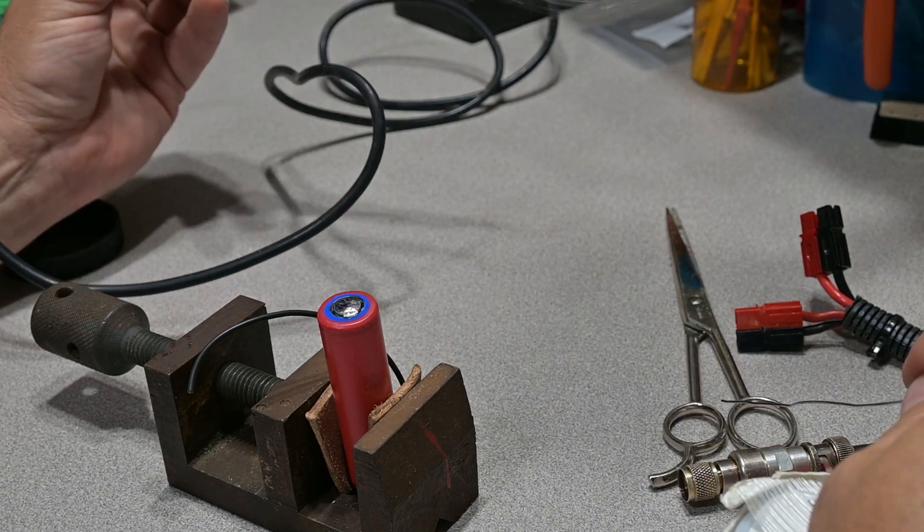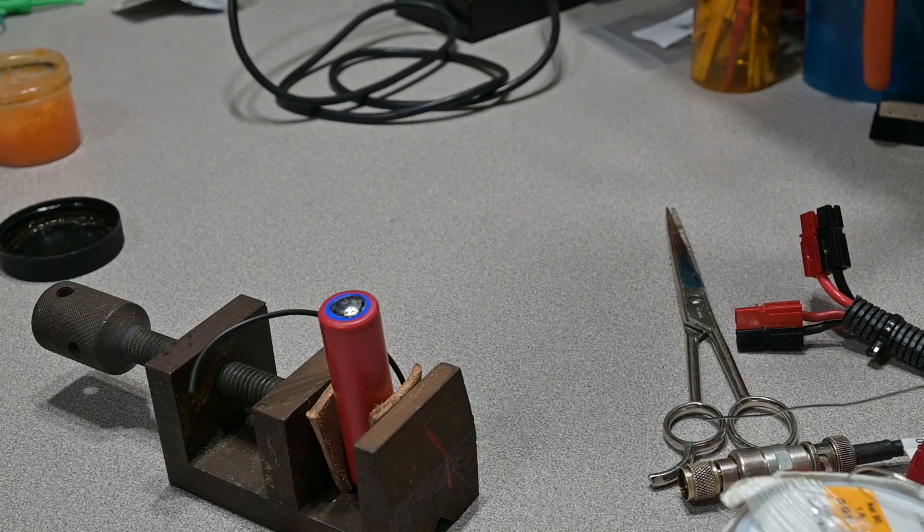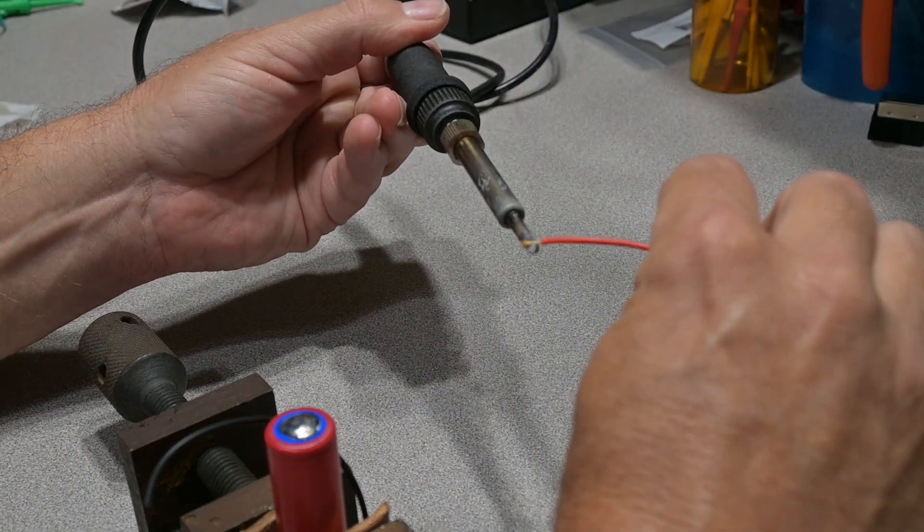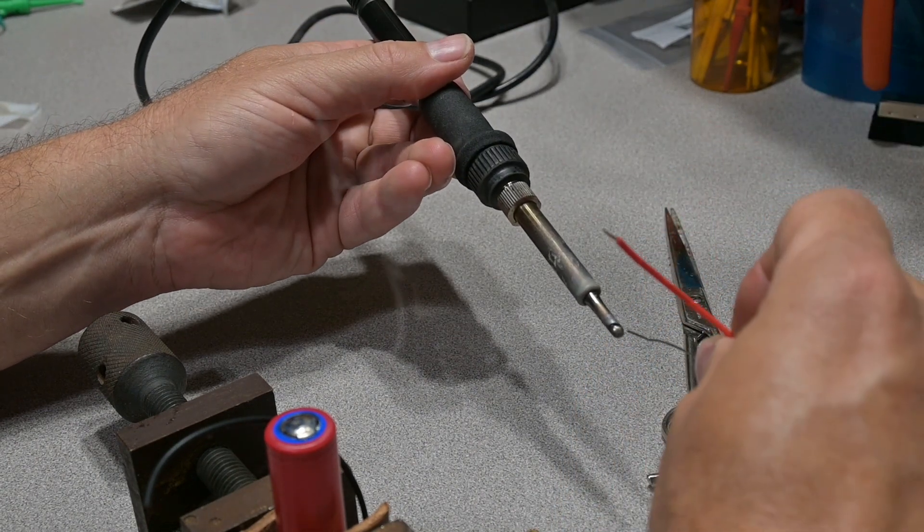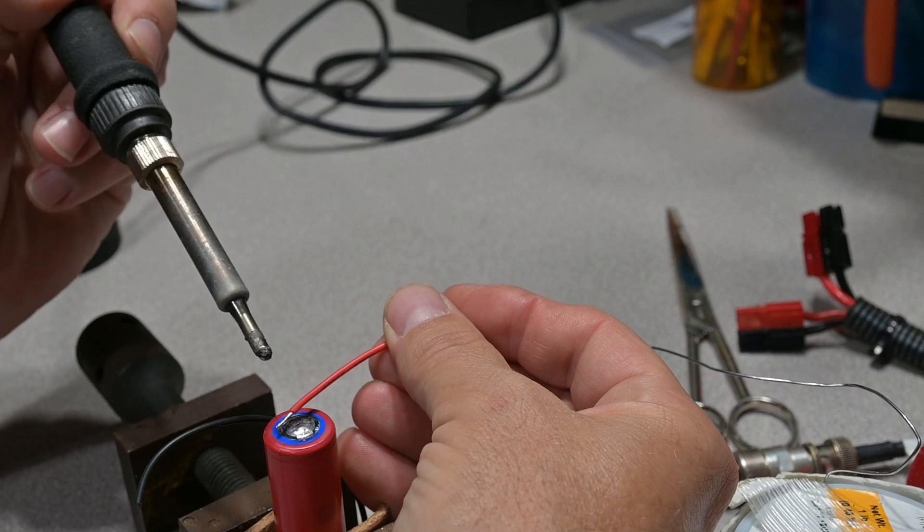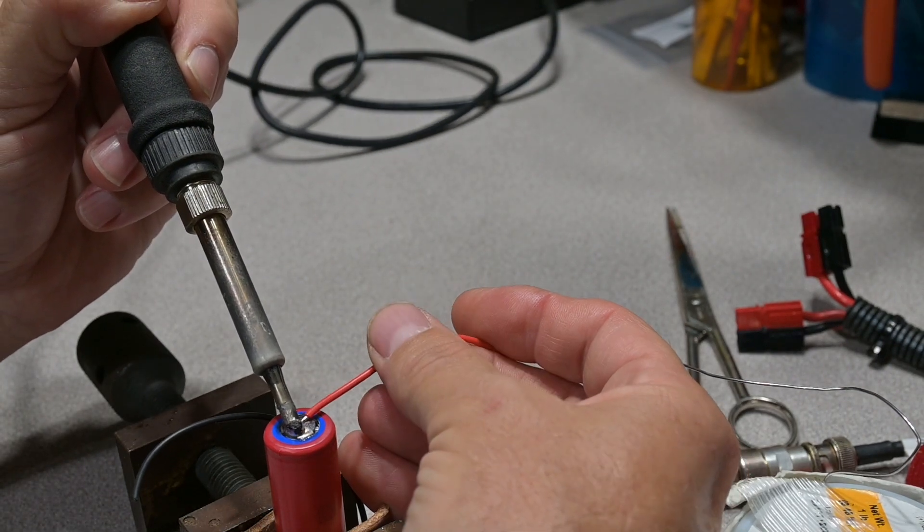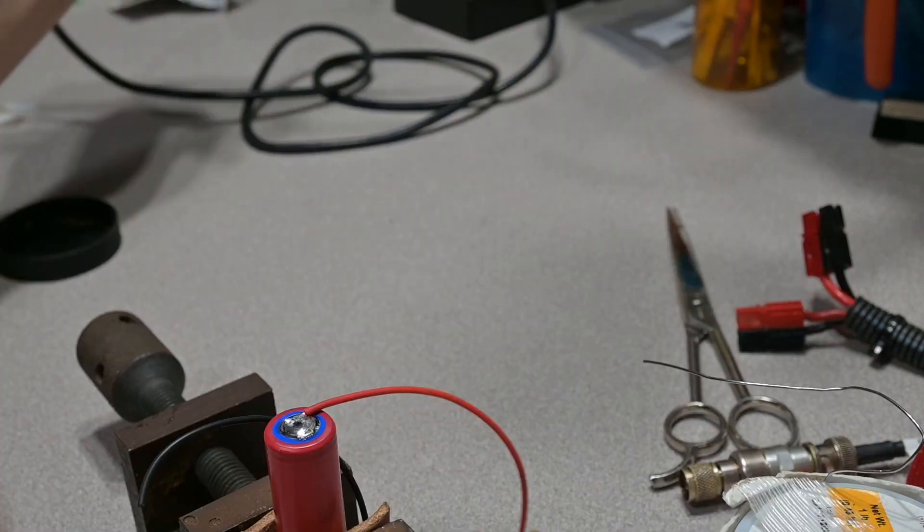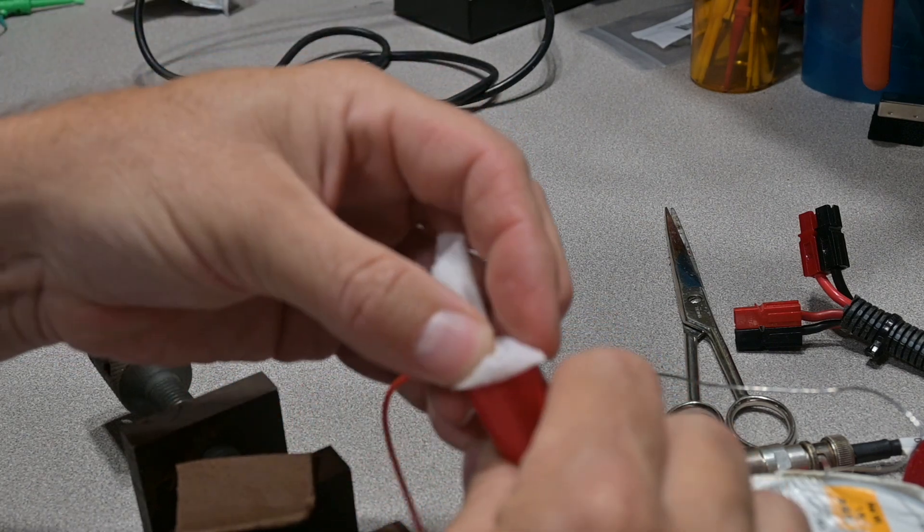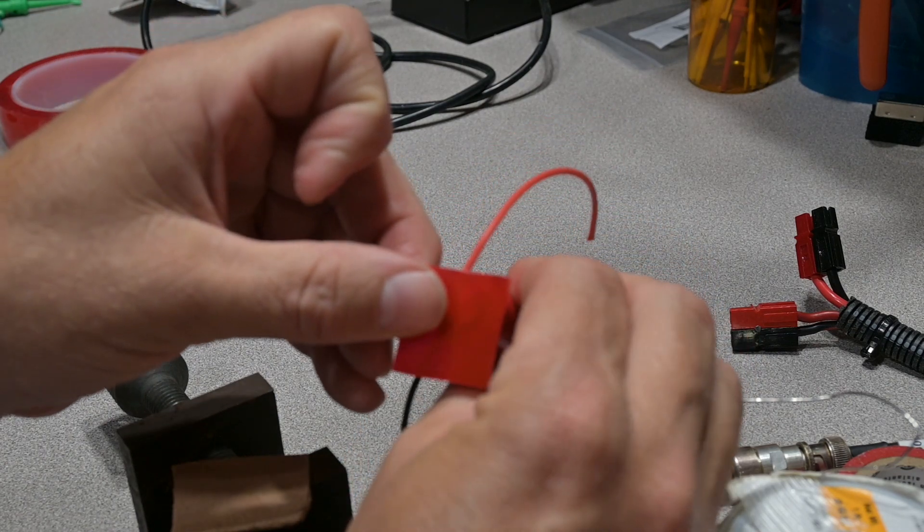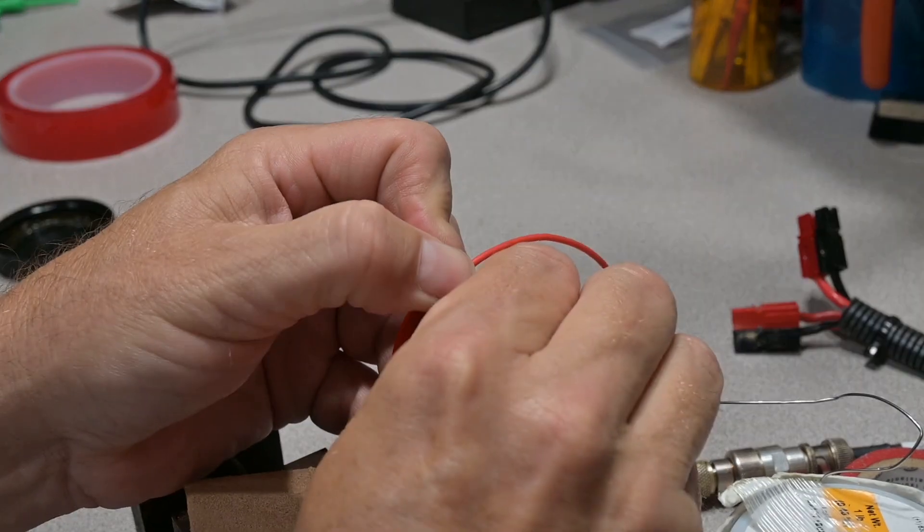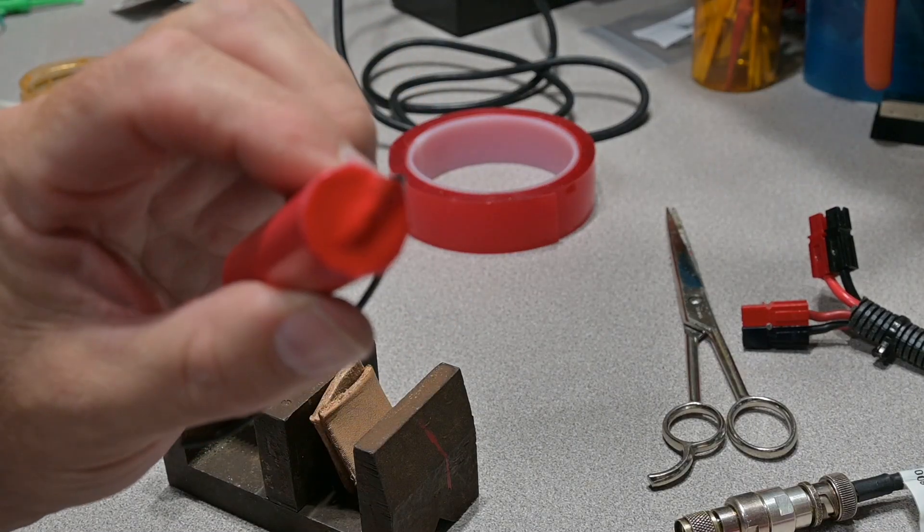Just like that. Apply your servo tape. Trim off the excess. And when you're done, you'll have something like that.